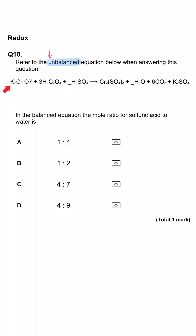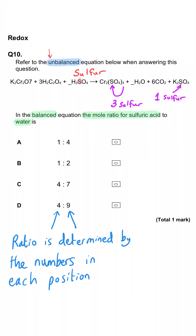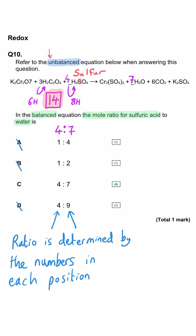Refer to the balanced equation below. The mole ratio for sulfuric acid to water is — we need to find the two missing coefficients. Balancing for sulfur: Cr2(SO4)3 has three sulfur atoms and K2SO4 has one, giving four sulfurs on the right, so we put 4 in front of H2SO4. That gives 8 hydrogens from the acid plus 6 from elsewhere, totalling 14, so we put 7 in front of water. The correct ratio is 4 to 7.